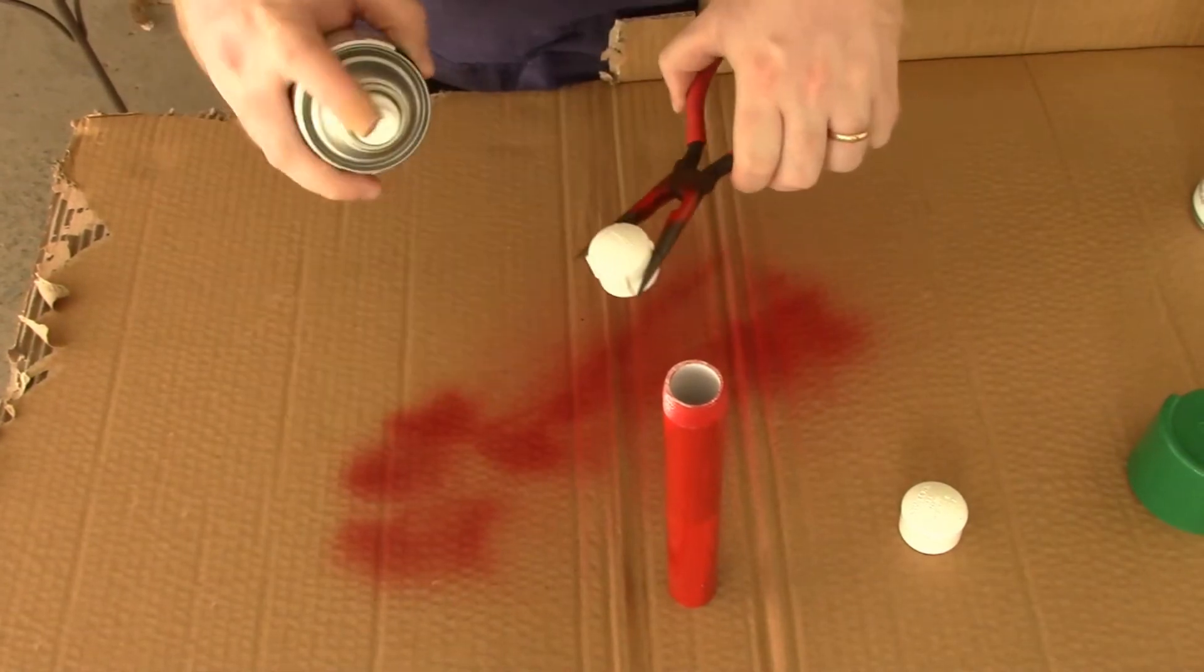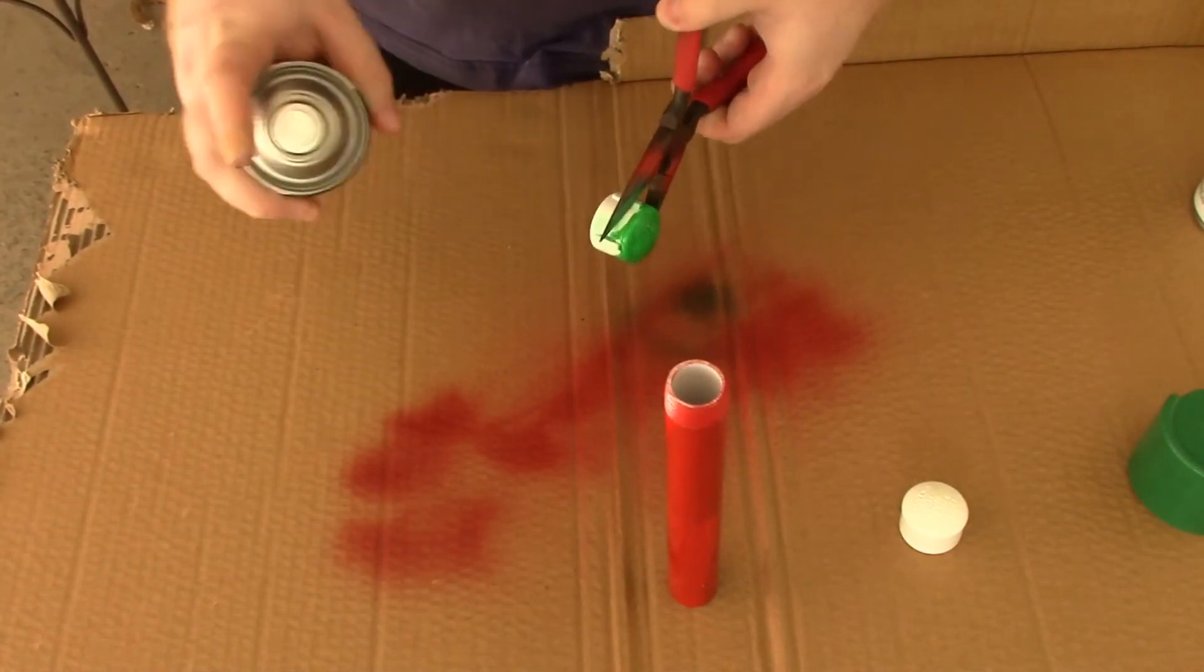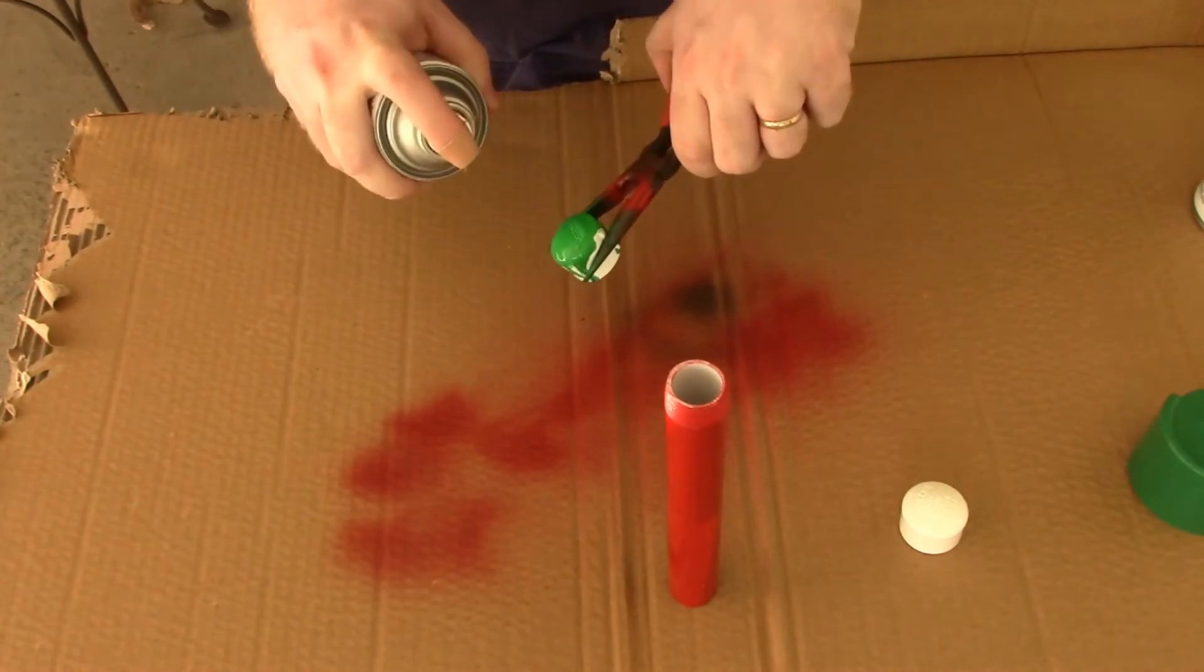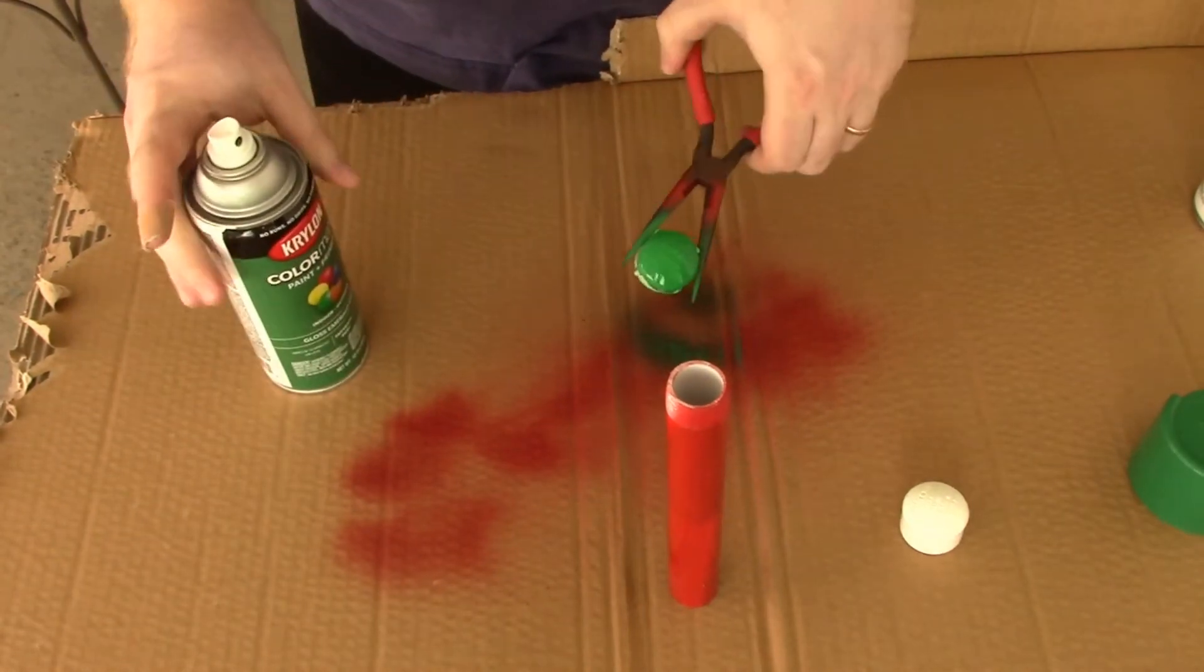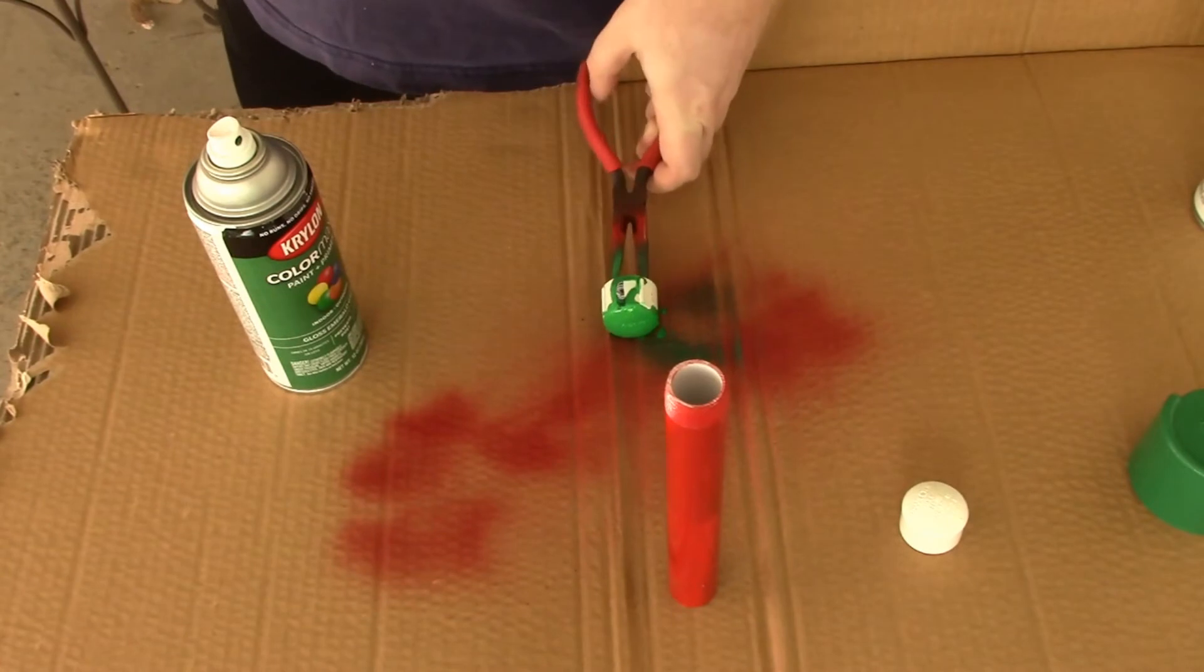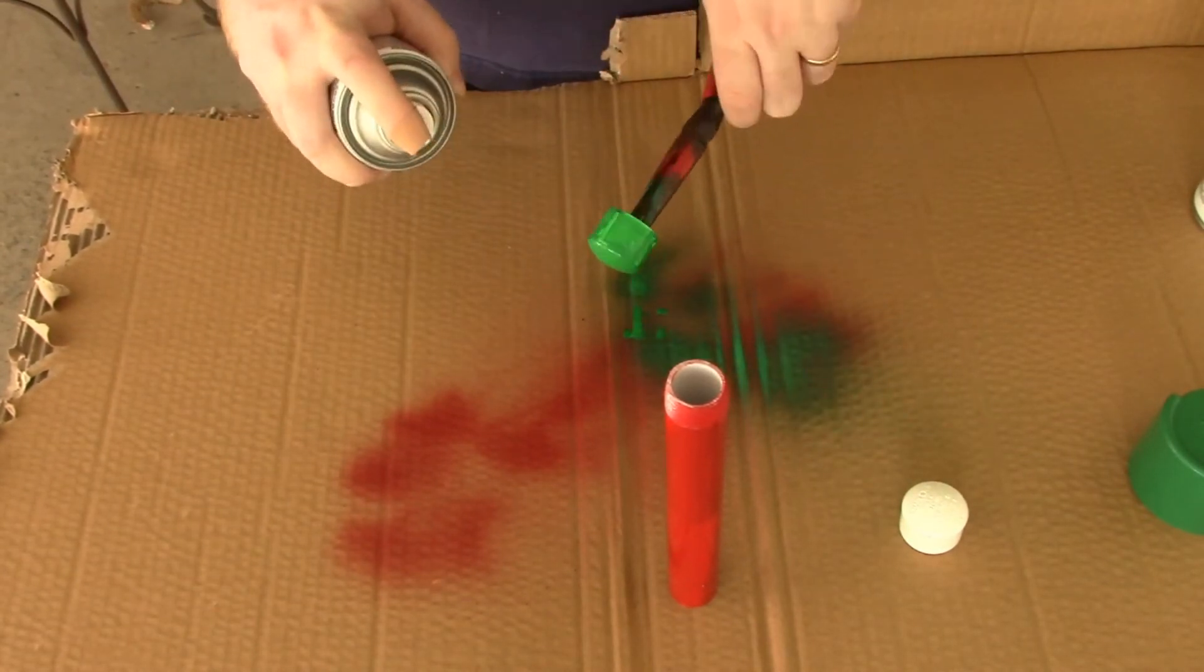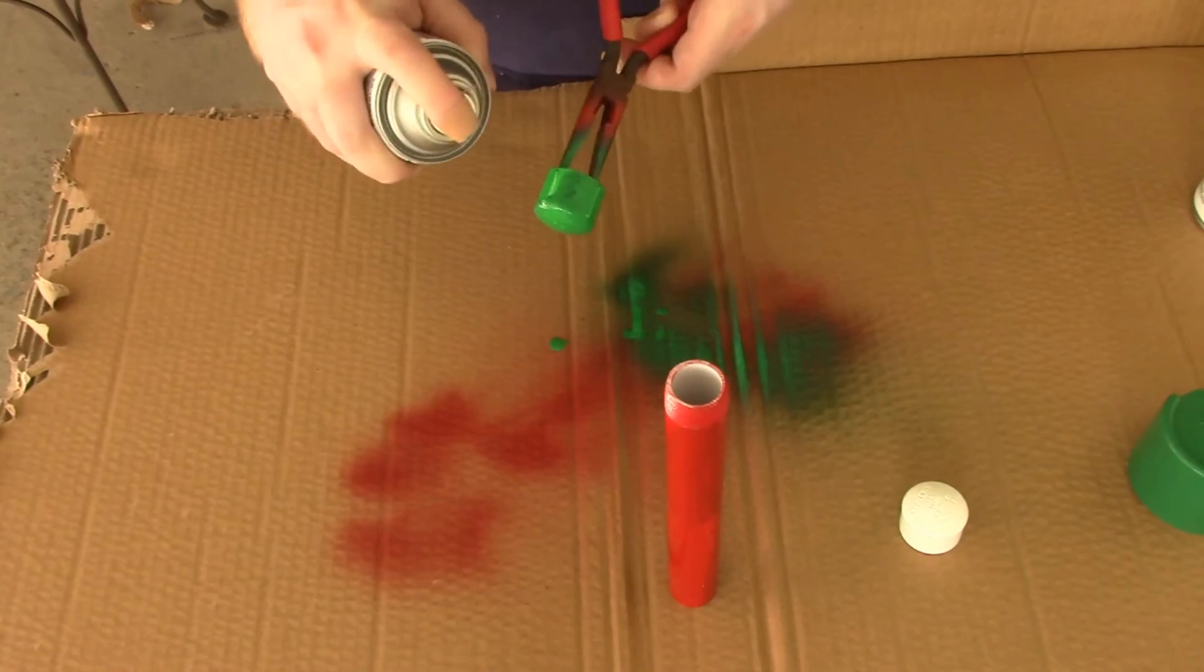Whatever paint you're using, the goal is to start off with an even and complete coat of your base color or colors. Then give it time to dry. Depending on temperature, humidity, and type of paint, this can take minutes, hours, or even overnight.